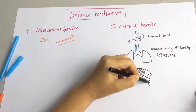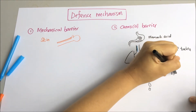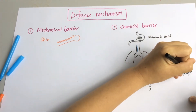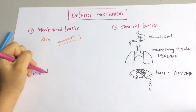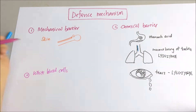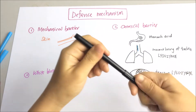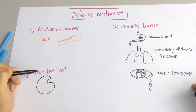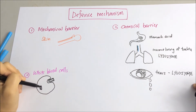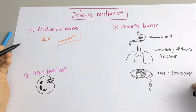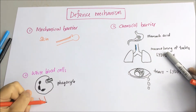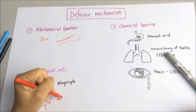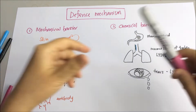Our tears, saliva, and mucus also contain an enzyme called lysozyme, which destroys microorganisms as well. The mechanical and chemical barriers are the first line of defense of the body's immune system. Once the pathogen bypasses this first line, the second line of defense — involving white blood cells, specifically phagocytes and antibodies — will deal with the pathogen.